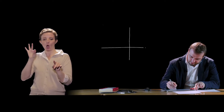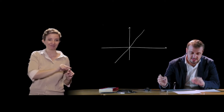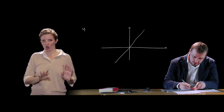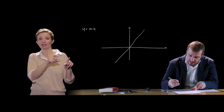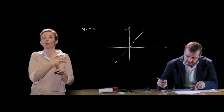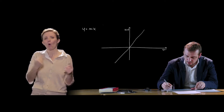Passiamo ad analizzare la retta nel piano cartesiano. Una retta passante per l'origine, purché diversa dall'asse delle y, ha un'equazione del tipo y = mx. L'asse delle y ha equazione x = 0, essendo l'insieme di tutti i punti con ascissa nulla, così come l'asse delle x ha equazione y = 0.